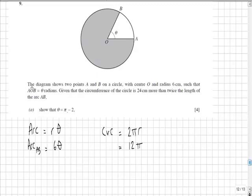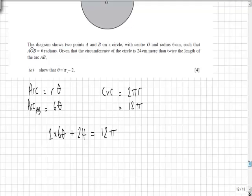So, given that the circumference is 24 centimetres more than twice the length of arc AB, twice the arc length is 2 times 6 theta. If we add 24 to that, we get our circle circumference, which we know is 12π. So we have 12θ + 24 = 12π.